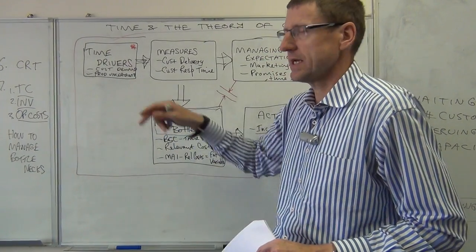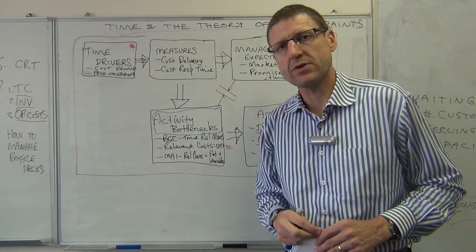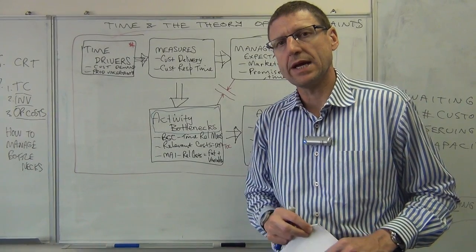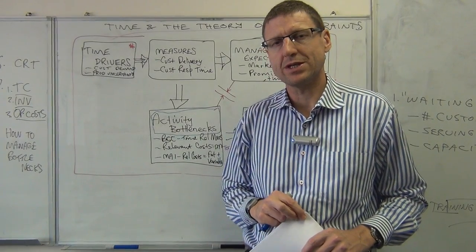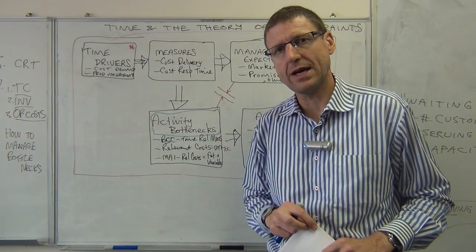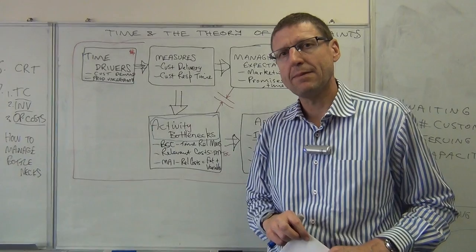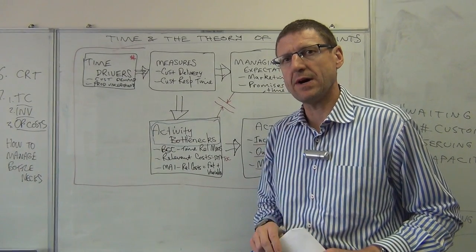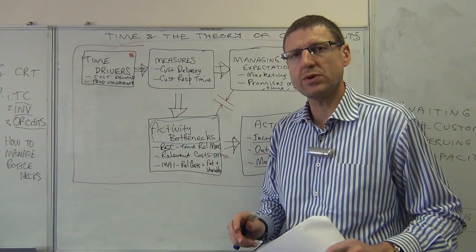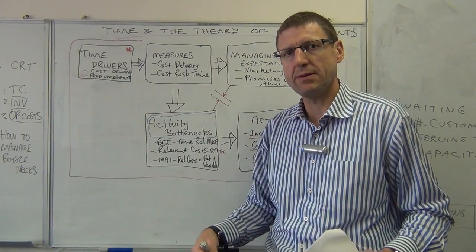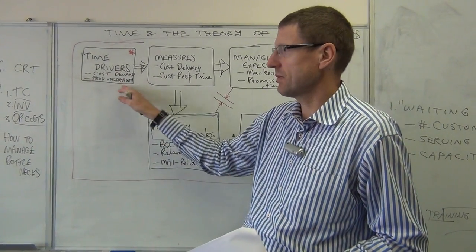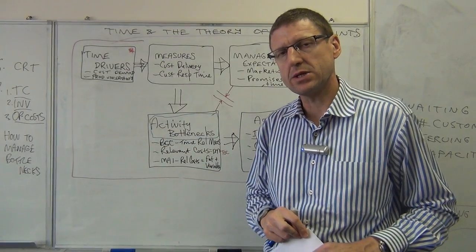Production uncertainty could be caused by the lack of control over the operations in the factory itself. There's many things that can cause production uncertainty. We would like to feel that we can have control over that. But because of other problems with quality, as we looked at last week, or the way things are delivered or the supply chain management, that can cause problems with production uncertainty.